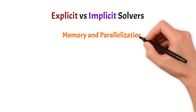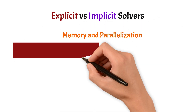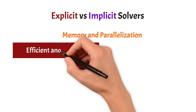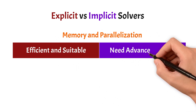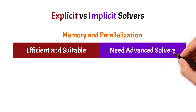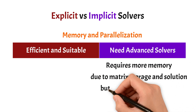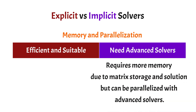Lastly, coming to the category of memory and parallelization, explicit solvers are much more efficient and suitable, whereas implicit solvers need some advanced solvers if you are interested in parallelizing and running the problem fast. Implicit solvers also require more memory due to matrix storage as well as solution calculation.